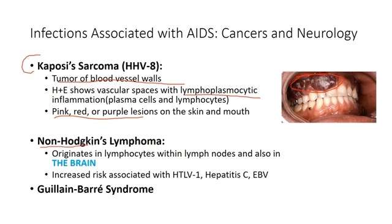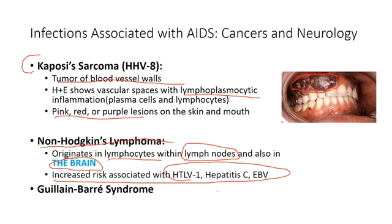Non-Hodgkin's lymphomas originate in lymphocytes within lymph nodes and can also occur in lymph tissue in the brain. In an HIV patient with neurological symptoms showing a tumor on CT scan, think B-cell lymphoma of the brain — this is very high yield and has appeared on both microbiology and pathology exam questions. HIV also increases risk for other viral infections such as HTLV, hepatitis C, and EBV. HIV can also cause Guillain-Barré syndrome.